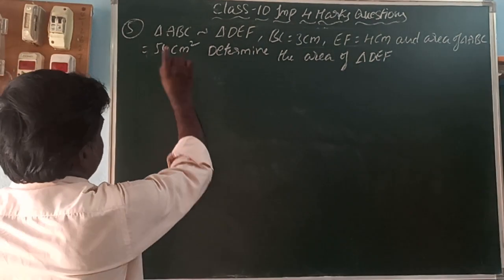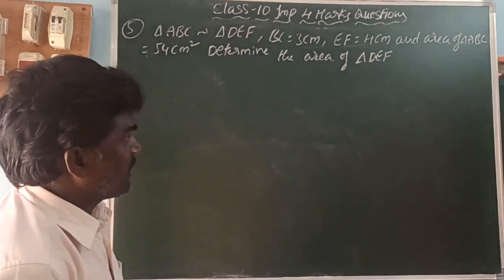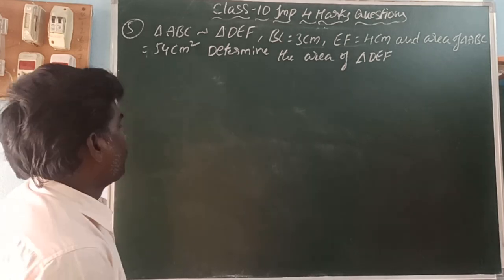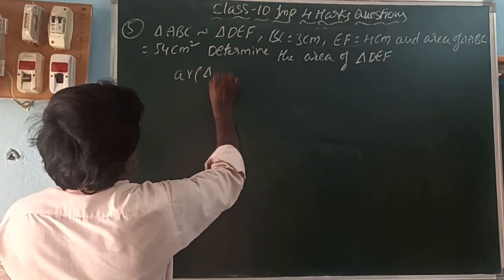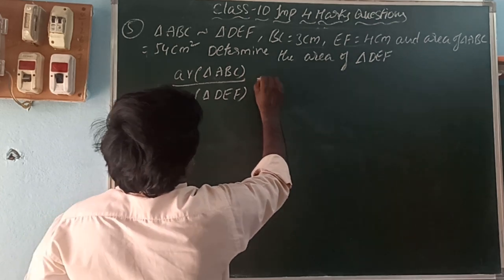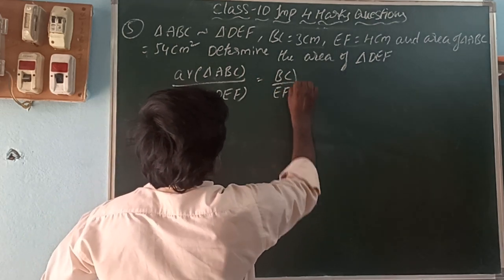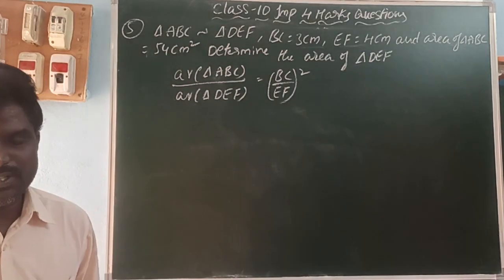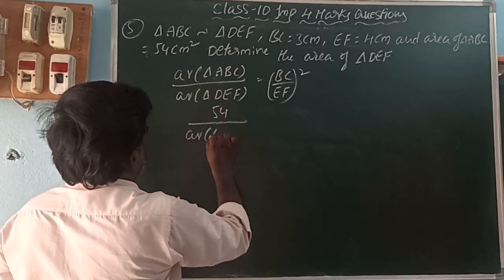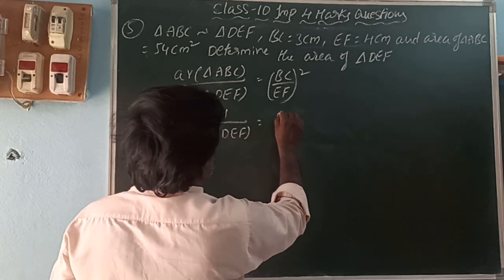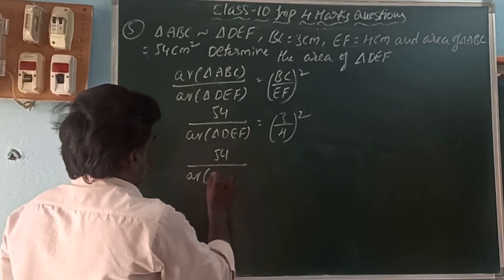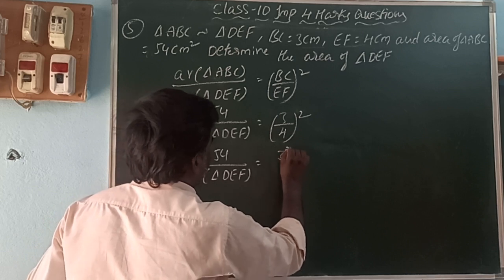Next: triangle ABC is similar to triangle DEF, BC = 3 cm and EF = 4 cm, and area of triangle ABC = 54. Determine the area of triangle DEF. Using the theorem, area of ABC divided by area of DEF equals (BC/EF)². So 54 divided by area of DEF equals (3/4)² = 9/16.